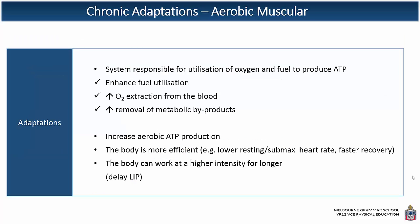Referring specifically to the muscular system within aerobic adaptations, let's take a closer look at what changes to make it more efficient and more economic. The muscular system, when referring specifically to aerobic ATP production, is responsible for the utilisation of oxygen and also fuel — from carbohydrates, fats and proteins as food fuel, or as glycogen, triglyceride or amino acids as chemical/body fuel to produce ATP. With adaptations that occur as a result of training, it's going to enhance the utilisation of this fuel. Changes such as an increase in enzymes and increase in fuel storage will enhance that production of ATP via the fuel.